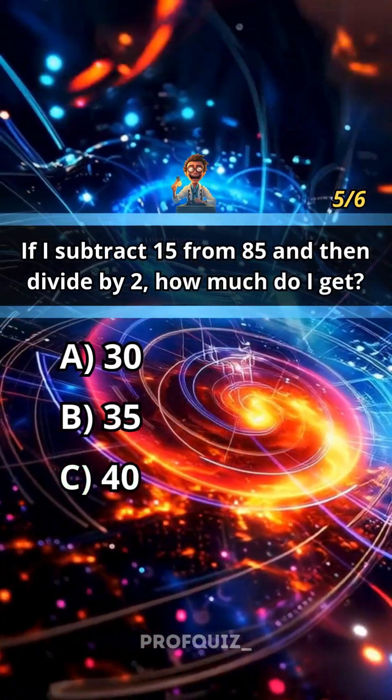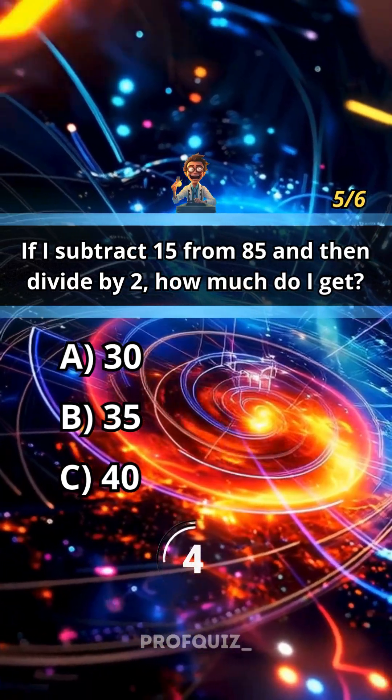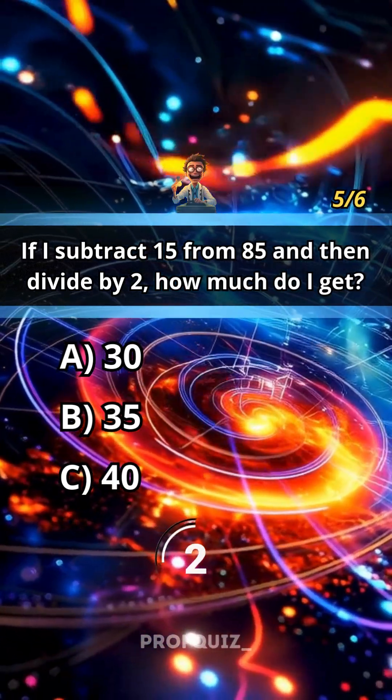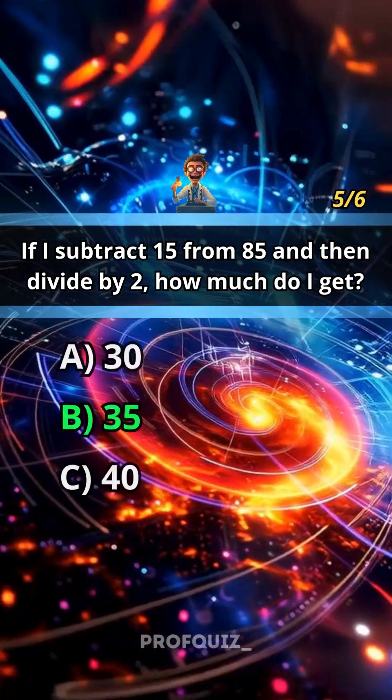If I subtract 15 from 85 and then divide by 2, how much do I get? Answer: B, 35.